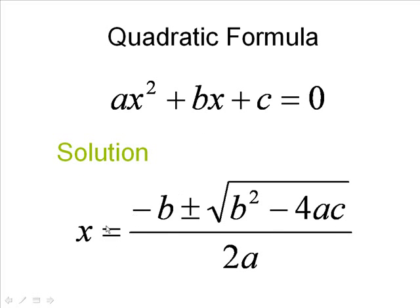The solution to this equation is given as follows, where X is equal to minus B plus or minus the square root of B squared minus four AC, all that in the numerator, and we divide that by two A. Let's look at an example on how we apply this formula.